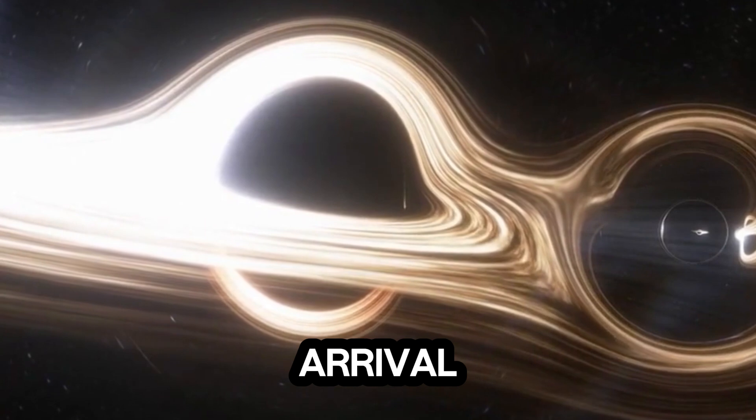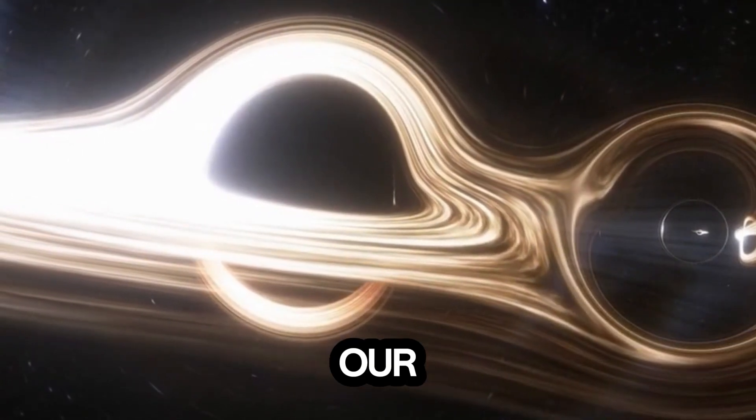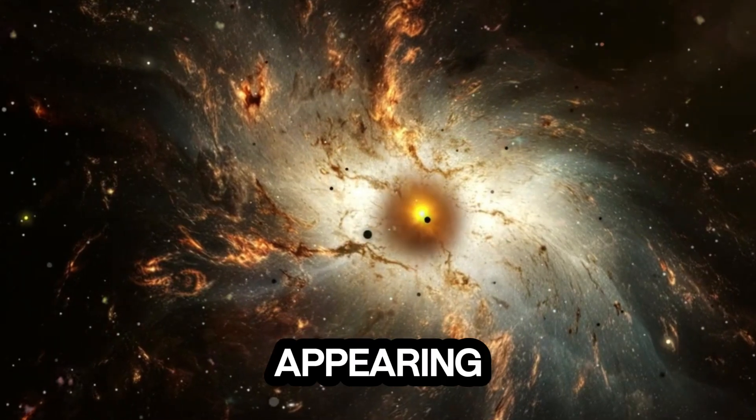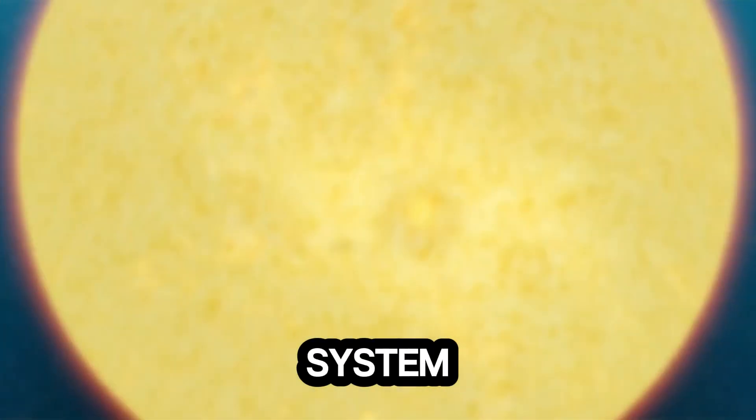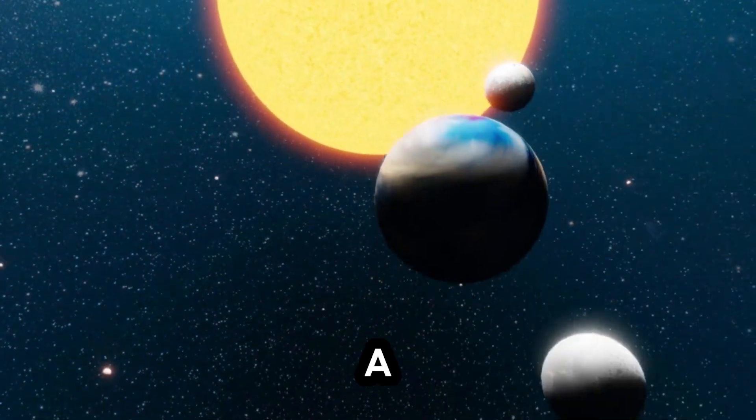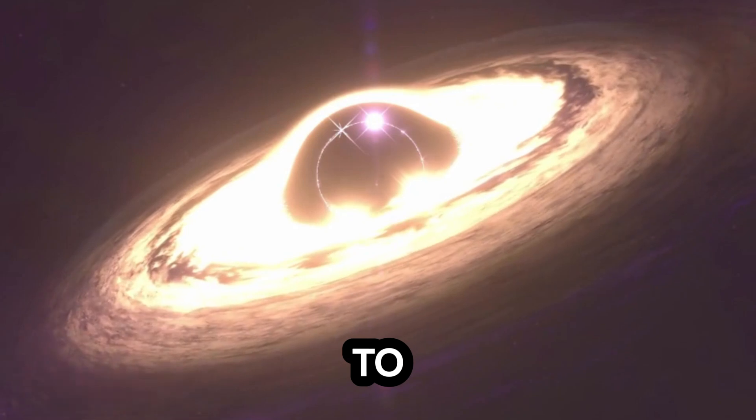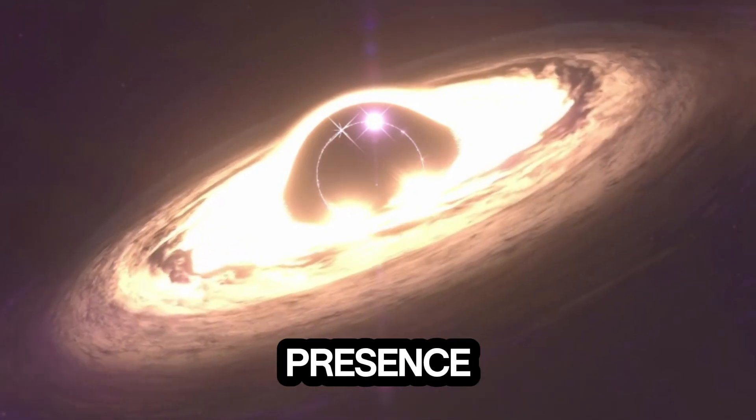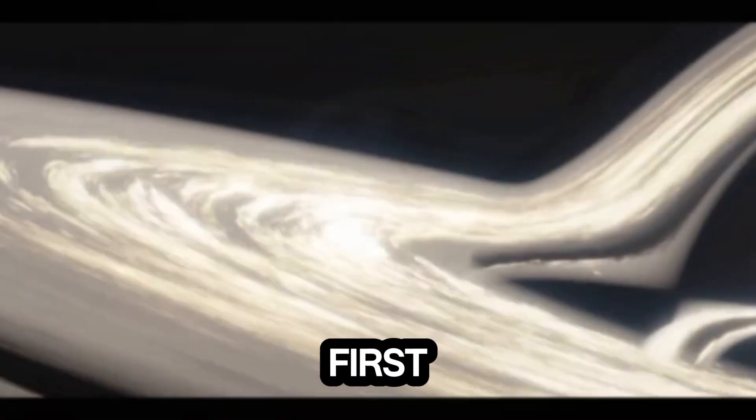The Arrival: A black hole enters our solar system. Imagine a black hole, even a small one, appearing near the edge of our solar system. Let's say it's about the mass of our sun. Astronomers call this a stellar mass black hole. It would be invisible to the naked eye, but its presence would be undeniable. The first sign?